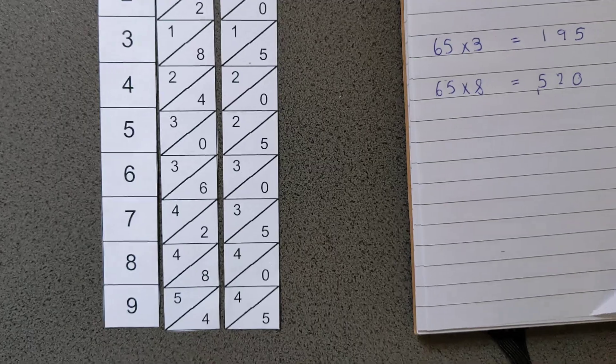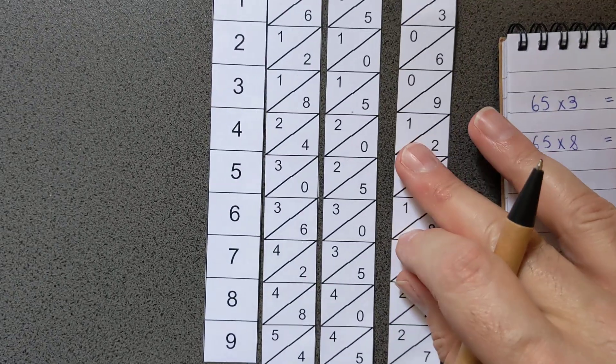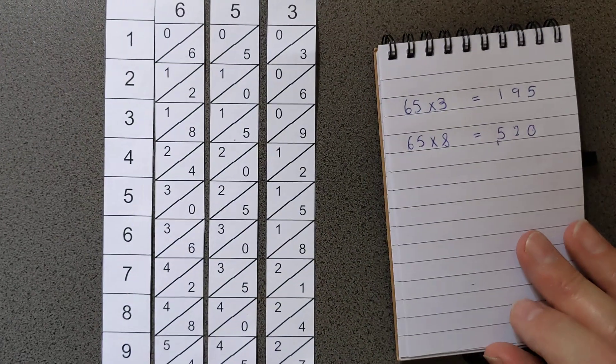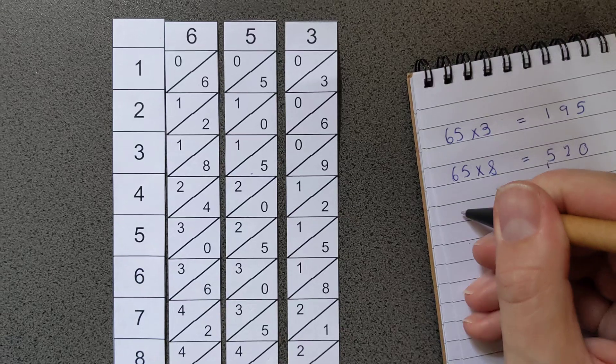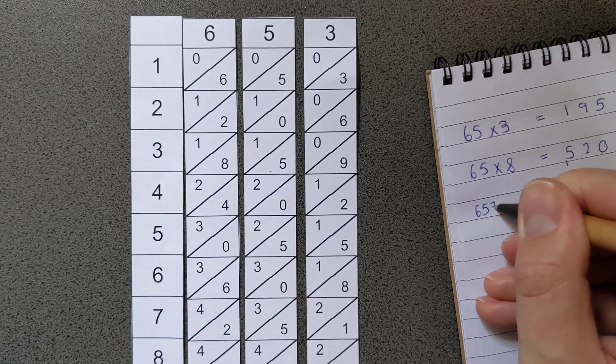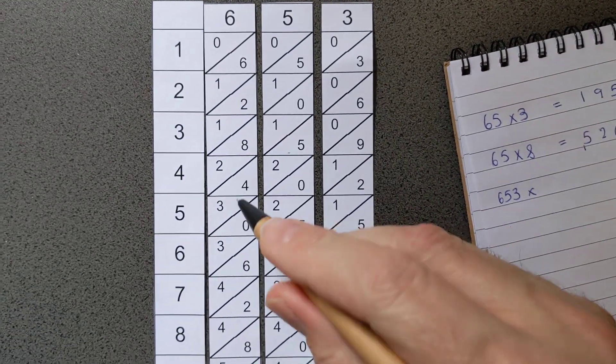So that's okay, and it works with more digits as well. So if I add 653, for example, if I wanted to do 653 times, I don't know, 4.